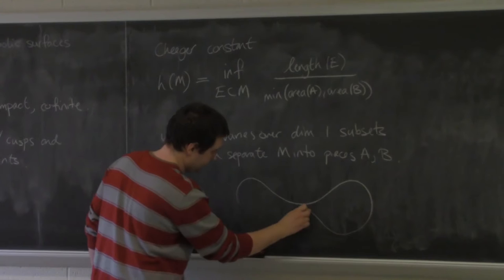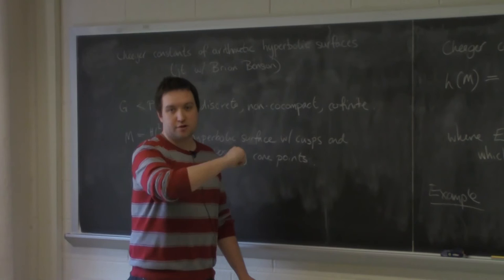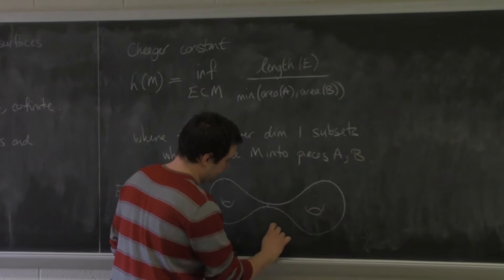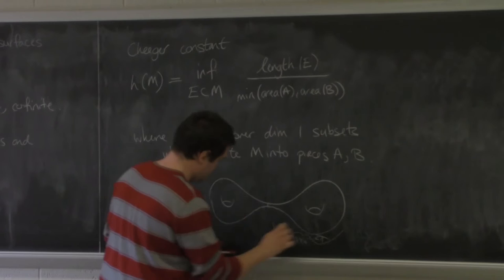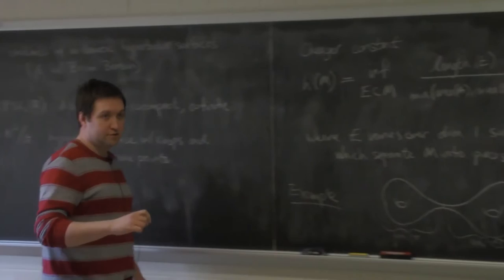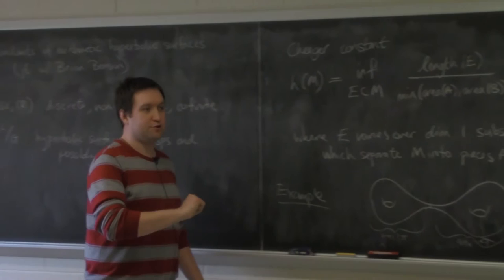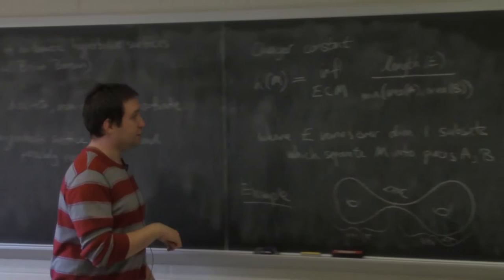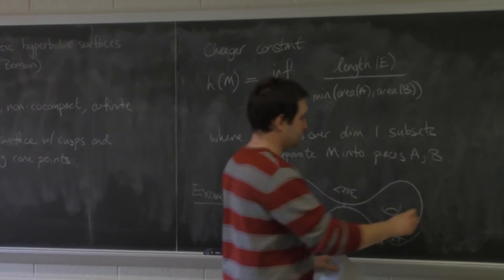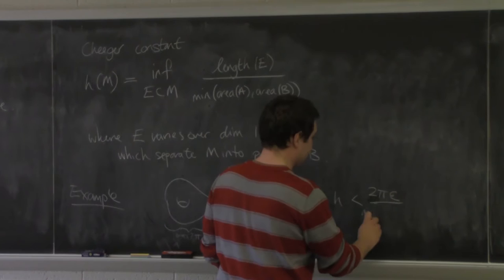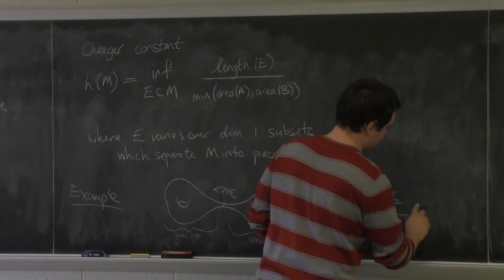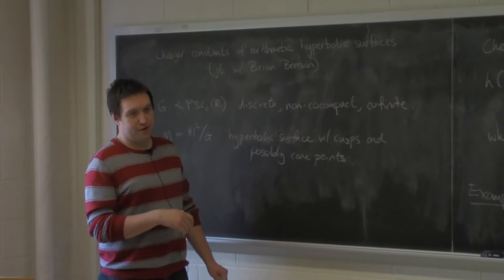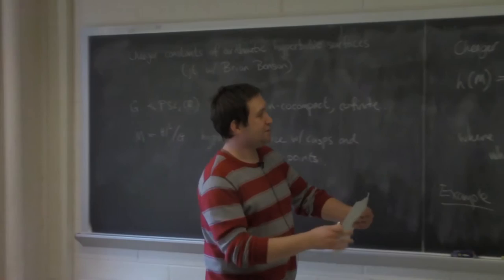The cartoon for an example with a very small Cheeger constant looks something like this: a genus-2 surface where I've chosen a separating curve and shrunk its length to be very small. You have two pieces, each of area 2π — each is a punctured torus. So if you give me some small epsilon, I can pinch this curve to be smaller than 2π·epsilon in length, and then the quotient is less than 2π·epsilon over 2π, which is epsilon.